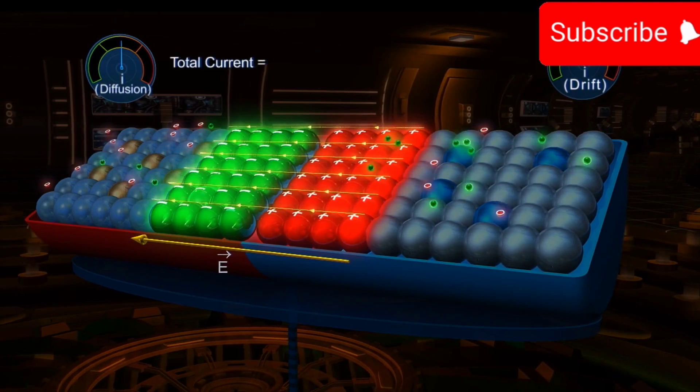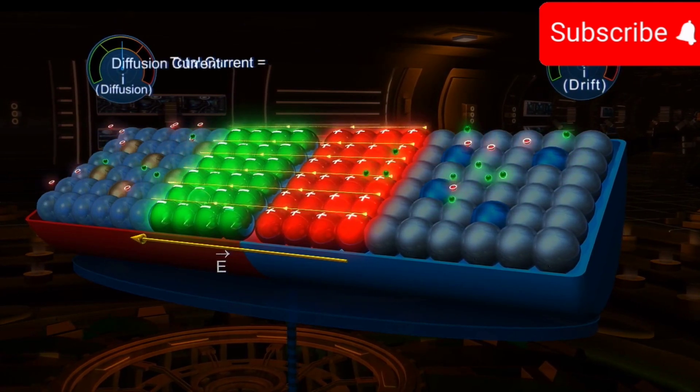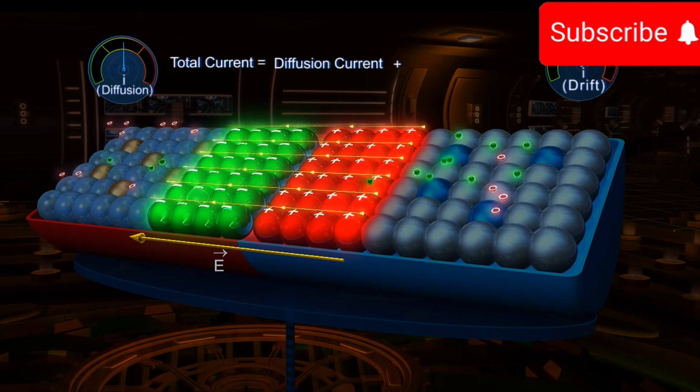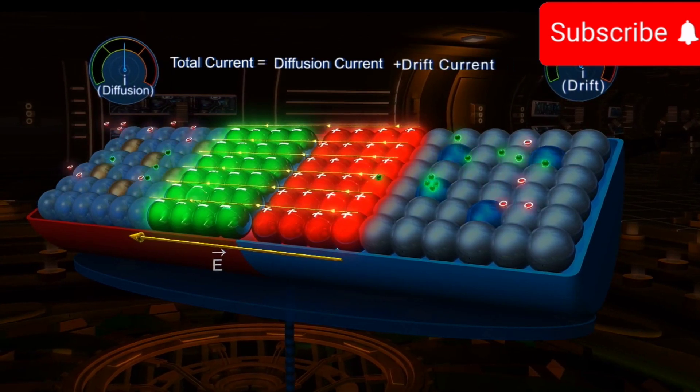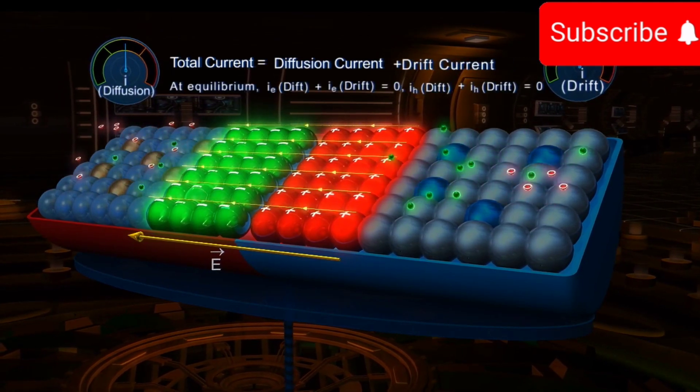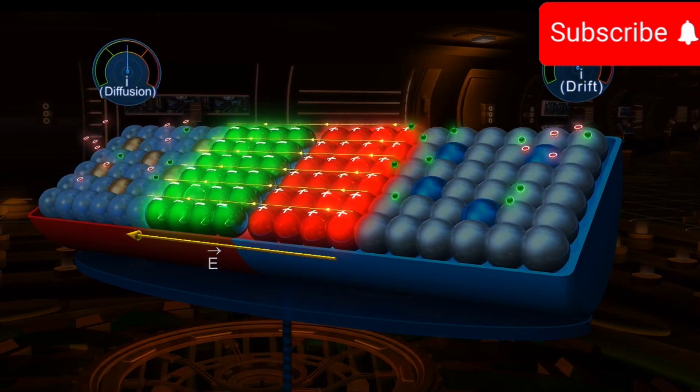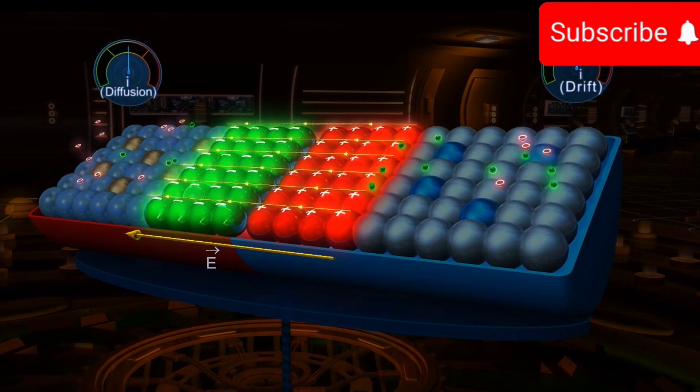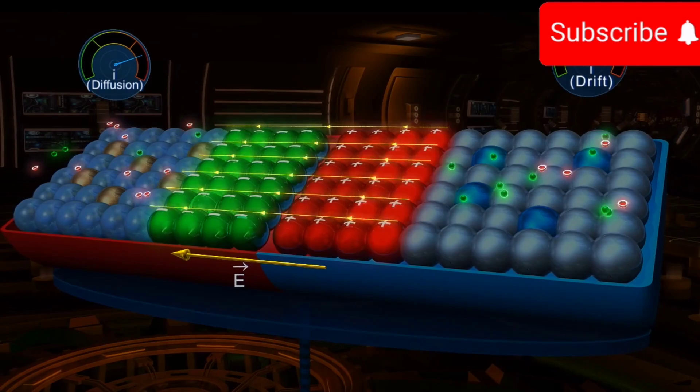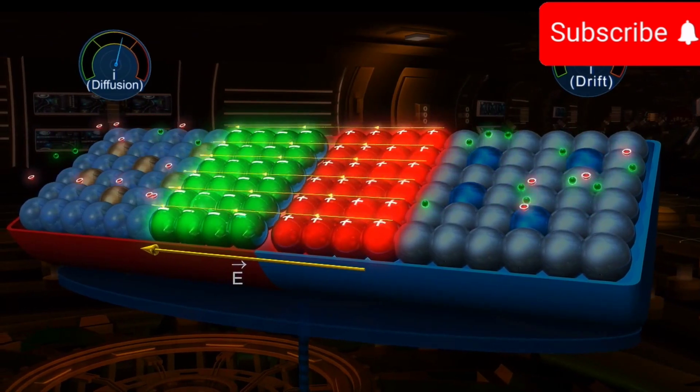The total current of a carrier crossing the junction is the sum of its diffusion current and the drift current. The net current of each carrier crossing the junction is zero at equilibrium. The two mechanisms, diffusion and drift, continue and make the field region devoid of charge carriers.